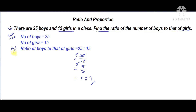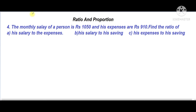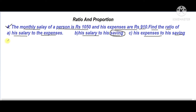Question number four: the monthly salary of a person is rupees 1050 and his expenses are rupees 910. Find the ratio of his salary to his expenses, and his salary to his savings. Since savings is not given, we will find it first by subtracting expenses from salary.